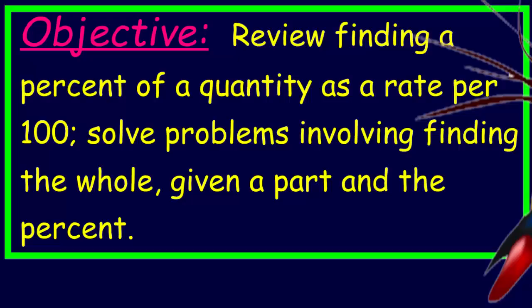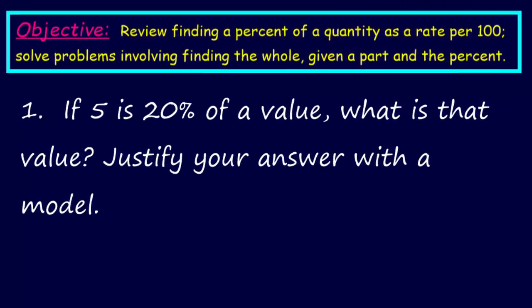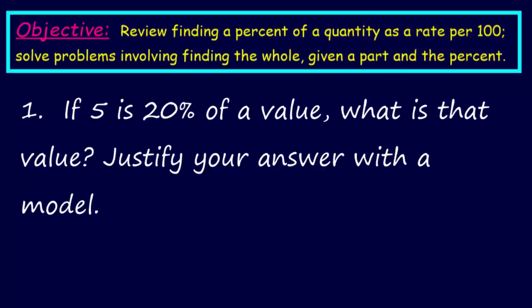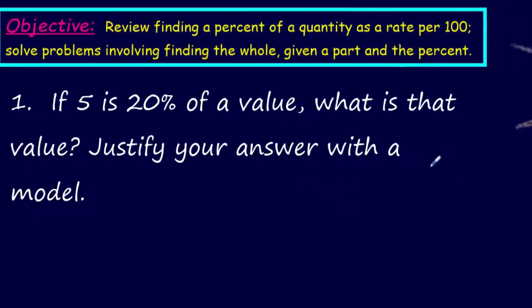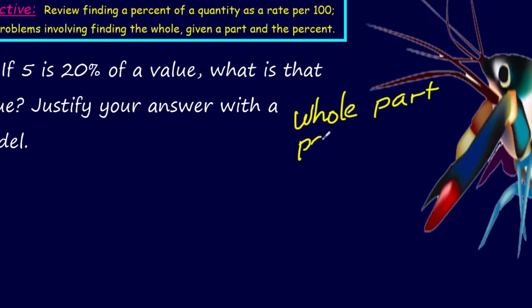Let's go to the next page. Here we are. Number one says: if five is 20% of a value, what is that value? Justify your answer with a model. I can see by just looking at that problem that it could be intimidating, because it seems like it's almost backwards. 'If five is' — 'is' is like equals, and it's in the front of the problem. '20% of a value' — that can be kind of confusing. Let's first realize there are three parts to this problem: the whole part, the part of the whole, and the percent.